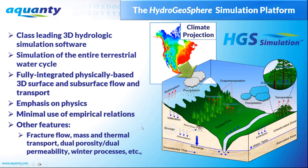This is really the full design philosophy behind HydroGeoSphere. As much as possible, we want to emphasize physics and minimize the use of empirical relationships. We typically model at the watershed scale, though any scale is possible. It's fully integrated — all components of terrestrial flow are accounted for: 2D or pseudo-3D surface flow, variably saturated subsurface flow, solute transport, discrete fracture networks, mass and thermal energy transport, dual porosity or dual permeability formulation, winter processes, time-varying material properties, and one-dimensional hydraulic features. It's a very feature-rich program with many capabilities.